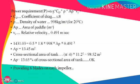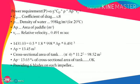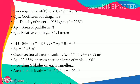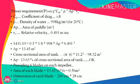We are providing six blades on each impeller. With four impellers, there are 24 blades total. The area of each blade = 13.45 / 24 = 0.56 m². The dimensions of each blade will be approximately 200 cm × 28 cm.